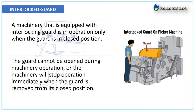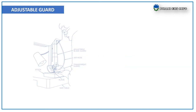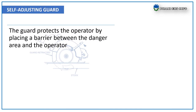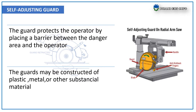Example: interlocked guard on a picker machine. Adjustable guard — adjustable guards are useful because they allow flexibility in accommodating various sizes of stock. They provide a barrier that may be adjusted to facilitate a variety of production operations. Example: adjustable guard on a bandsaw. Self-adjusting guard — the guard protects the operator by placing a barrier between the danger area and the operator. The guard may be constructed of plastic, metal, or other substantial material. Example: self-adjusting guard on a radial arm saw.